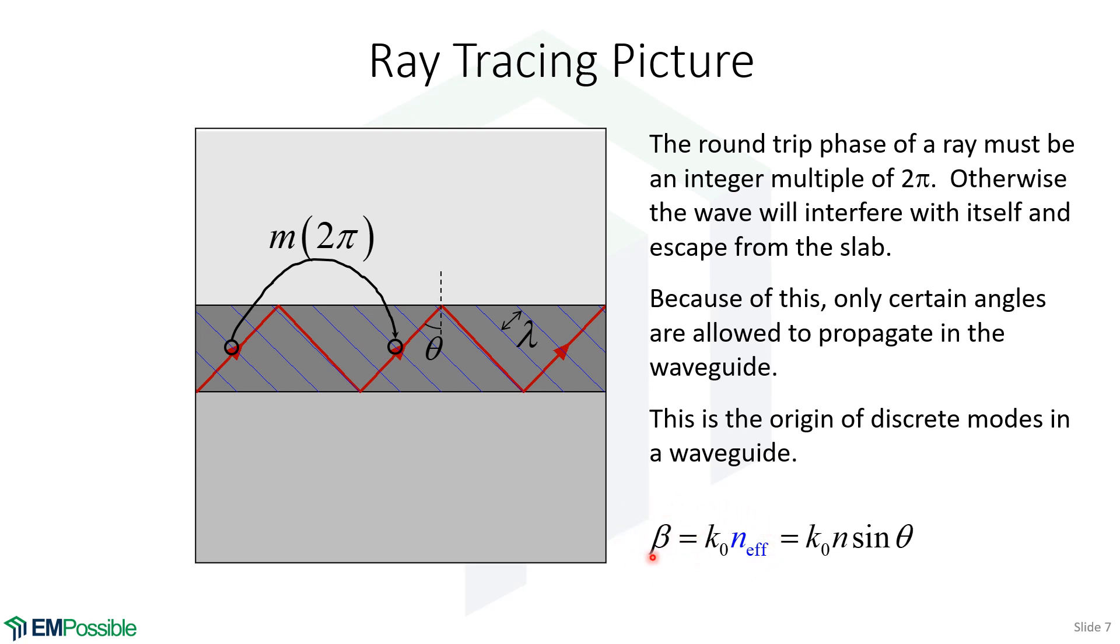This product will appear inside our cosine describing the wave. We call this a phase constant and give it a single value, beta. Beta is the phase constant—it tells us how quickly the wave is oscillating, how quickly it accumulates phase as it propagates.